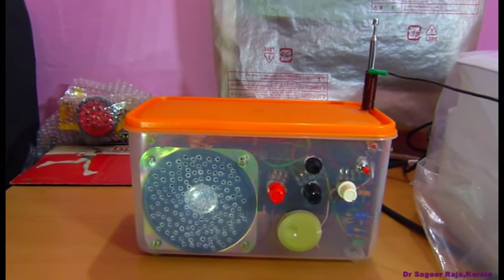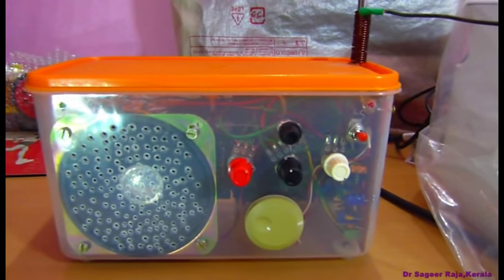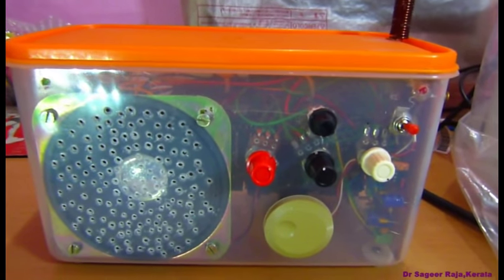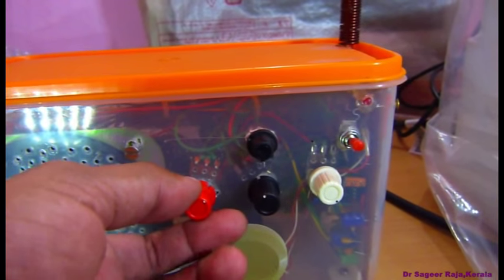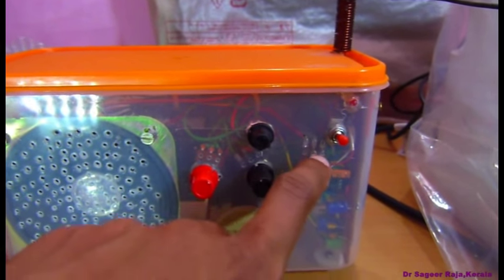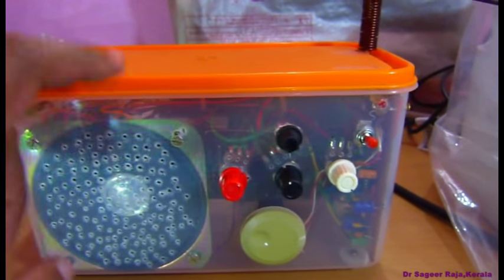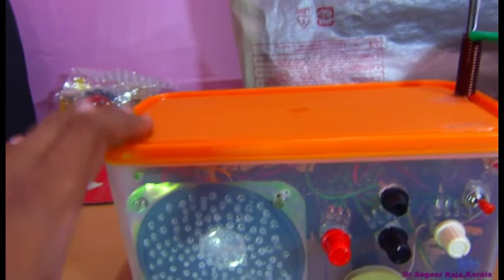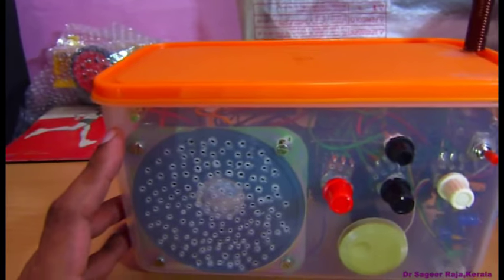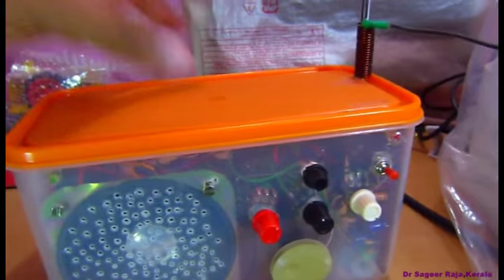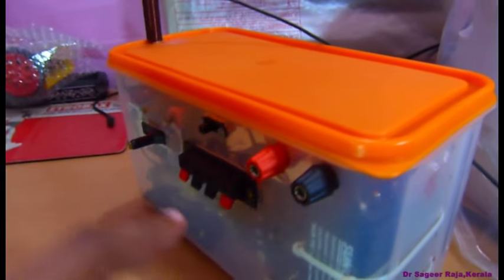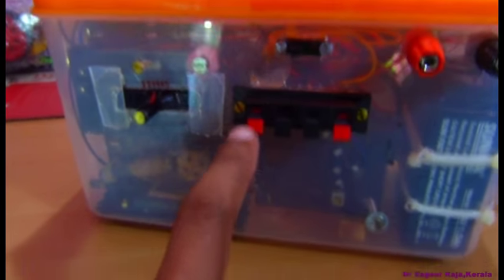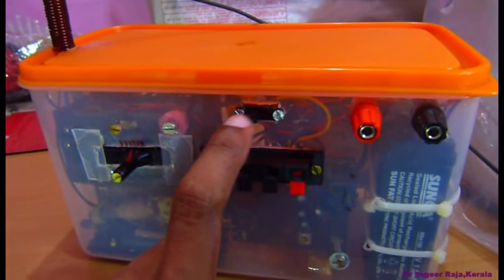This is the completed installed world receiver radio. All of the components I assembled inside a plastic box. Different type of controls: this is the volume control, tone control, gain control, the toggle switch, this is the fuse, tuning signal strength indicator. I have converted this radio into solar and rechargeable. This is the charging port behind.